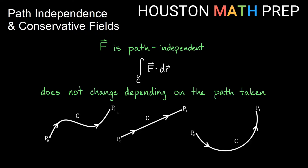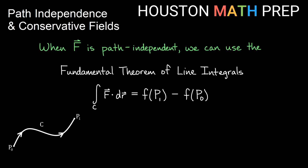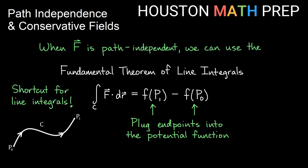A shortcut we get is not only can I just choose a simple path, but it turns out we don't need to choose the path at all. We can use the fundamental theorem of line integrals to figure out the work along the curve from point p0 to point p1. This allows us to shortcut line integrals entirely — I don't have to parameterize my curve, write it as a vector-valued function R, or figure out m, n, dx, and dy. All I need to do, if I have something that is path independent, is find the potential function, plug in my endpoint, plug in my starting point, and subtract.